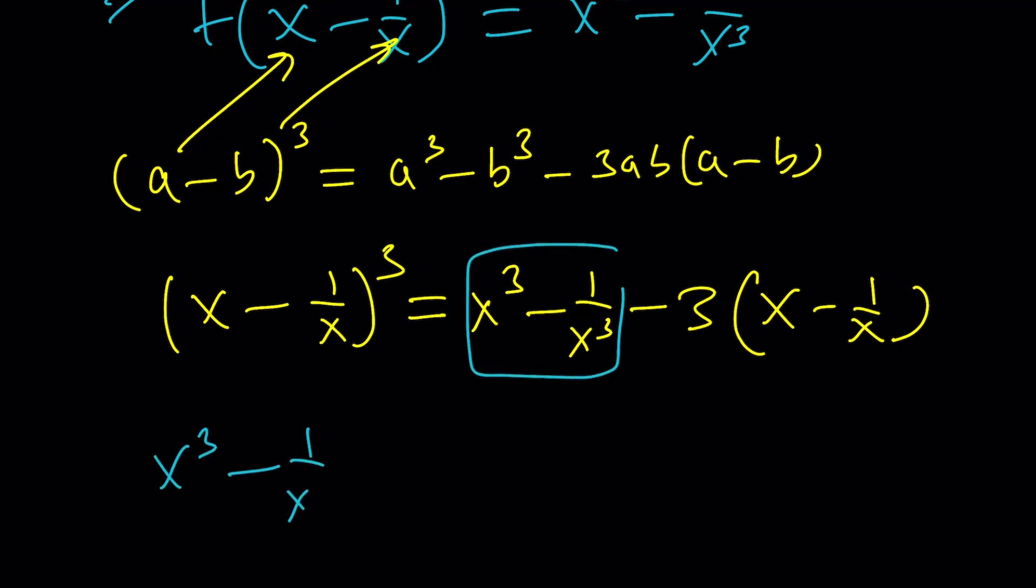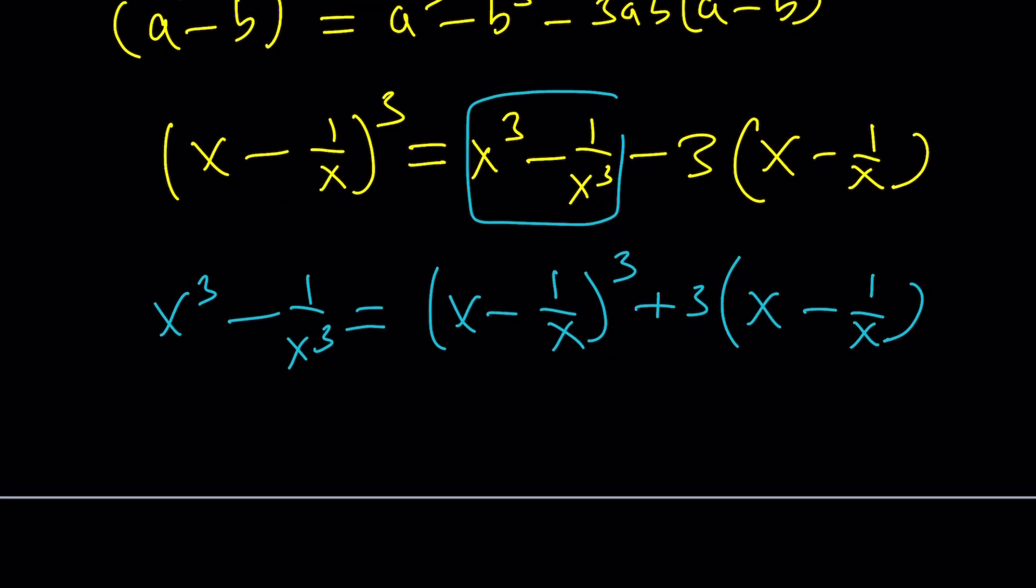x cubed minus 1 over x cubed is going to be, here we go. This is why we have a plus sign because the stuff will appear on the other side. Makes sense. Now, this makes more sense. And now, I have the following.